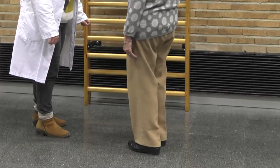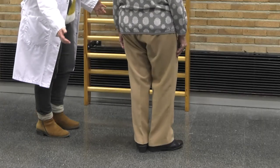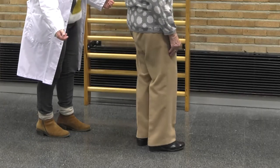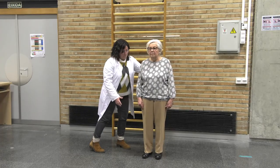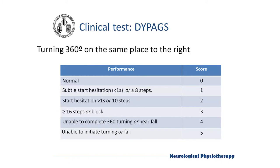Turning 360 degrees towards the right, we ask the patient to do a complete turn on the same spot. We evaluate whether the patient hesitates at the start, the number of steps taken while turning, whether the turn is not completed, if there is destabilization, or if he or she is not able to start the test.